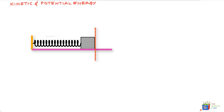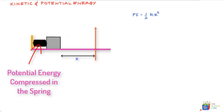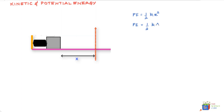The potential energy stored in the spring is given by the expression PE = ½kx². We can rewrite this equation as PE = ½k·a²·cos²(ωt + φ), and this is coming from the lessons we've learned earlier. If you're doubtful about this I would suggest you go back to the earlier two lessons before continuing with this lesson.